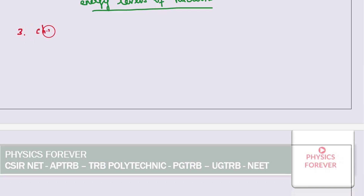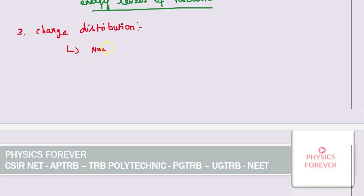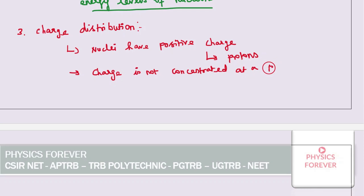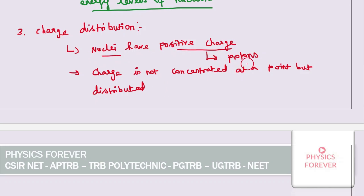The third nuclear property is charge distribution. The nuclei have only positive charge — that positive charge is due to the proton. An important point: the charge is not concentrated at a point, but is distributed throughout the nucleus. This may be asked as a one-mark question.